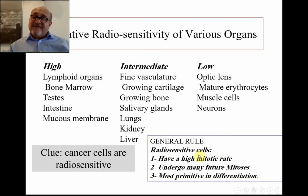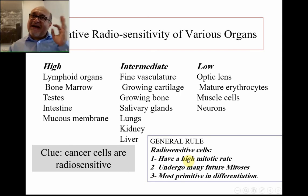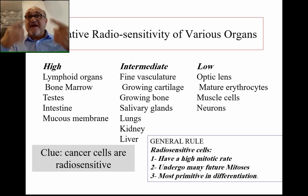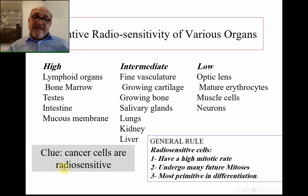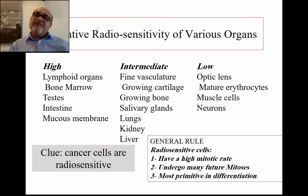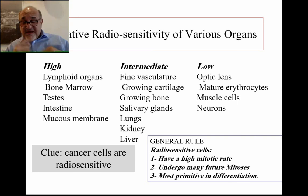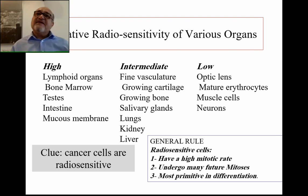Radio-sensitive cells are characterized by high mitotic activity, future mitosis potential, and being most primitive in differentiation — which are also typical characteristics of cancer cells. Cancer cells undergo multiple uncontrolled divisions and are very primitive, which is why they are highly affected by radiation. This is the principle of radiotherapy: it depends on the high radio sensitivity of cancer cells due to their uncontrolled process of division, making radiotherapy effective against them.